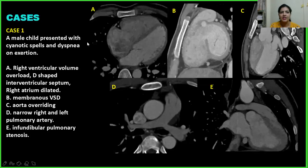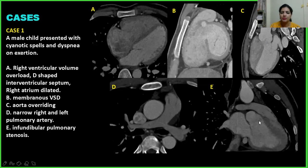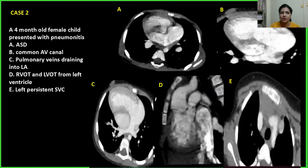Case 1: A male child presented with cyanotic spell and dyspnea. We can see right ventricular volume overload, D-shaped IV septum, and dilated right atrium. There is a membranous VSD, overriding aorta, narrow right and left pulmonary artery, and infundibular pulmonary stenosis. This was a classical case of Tetralogy of Fallot.